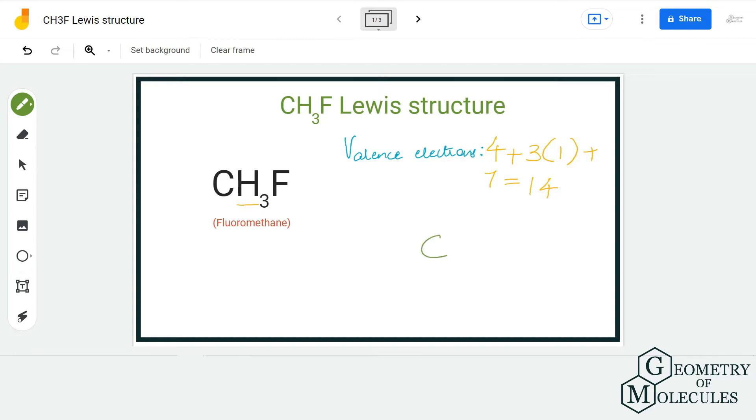Now I'm going to place carbon atom in the center, three hydrogen atoms around it like this, and the fluorine atom will also be placed around carbon atom. Please note that carbon is the least electronegative atom, and hydrogen atoms cannot take the central position. Hence, carbon will take the central position and the arrangement of atoms would be like this.